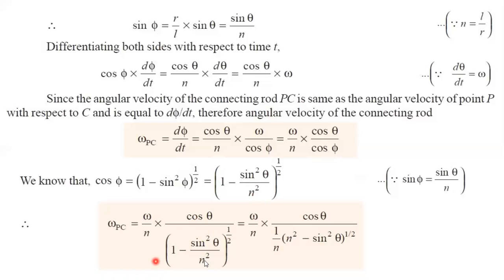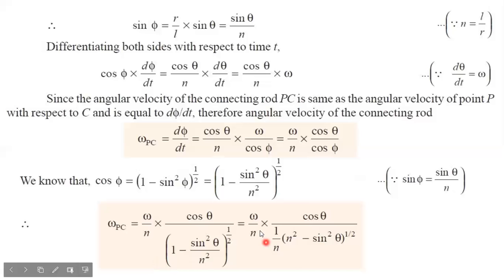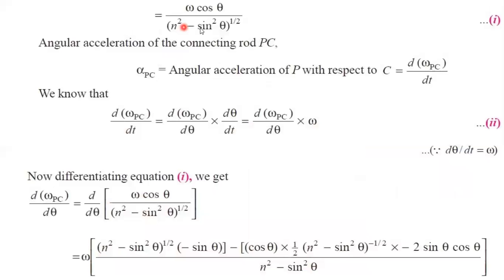If you take n outside from the square root term, you get n squared, and since we already have a root, the n terms cancel. Taking the LCM gives n squared minus sin squared theta, whole power 1 by 2. This n and the other n get cancelled. So omega PC equals omega cos theta divided by the square root of n squared minus sin squared theta. This is equation 1, giving us the angular velocity of the connecting rod.